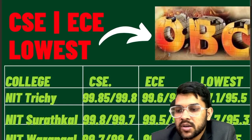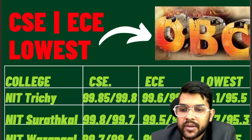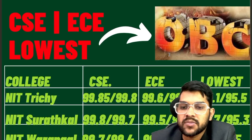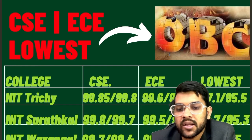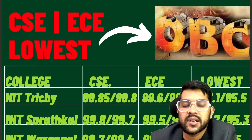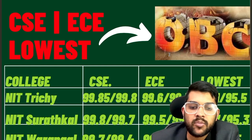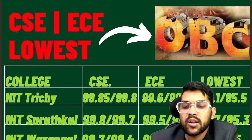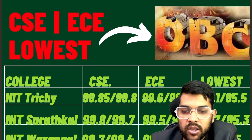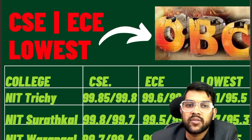Let's get started. For NIT Trichy: 99.85 and 99.8 — that is for CSE branch male and female. For EC: 99.6 and 99.3 — that is for male and female, where the figure after the slash is the female cutoff. The lowest branch cutoff is 97.1 and 95.5.